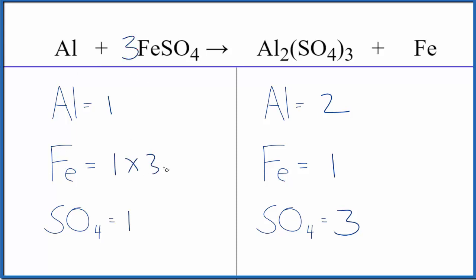Now I have three iron, but one sulfate times three, I have three of those, so those are balanced. Now it's easy to fix the iron. I just need to put a three here, one times three.